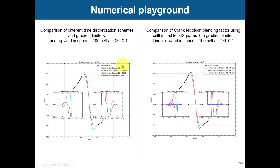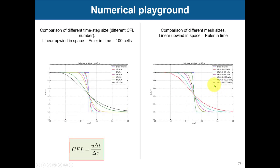We go to least squares and Gauss linear, and here we have a comparison of time derivatives — time discretization. We have Crank-Nicholson blending factor using cellLimited. We're using Crank-Nicholson 0, 0.5, and 1. One is pure Crank-Nicholson second order, and it's a little bit oscillatory. When you have the red line at zero — the first-order scheme — it's a little bit more bounded but adds a little more numerical diffusion. So also in time you have that influence.